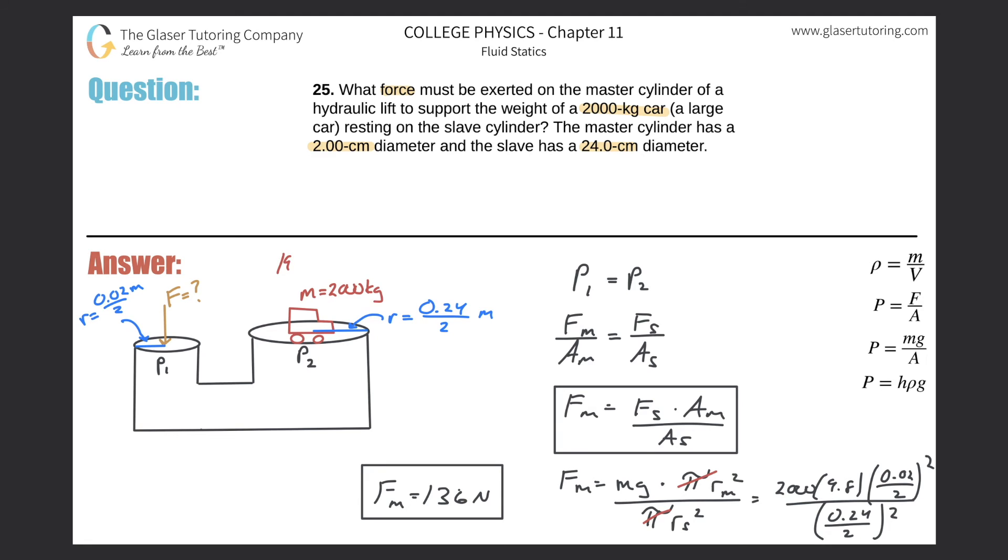This is basically like mechanical advantage. Here's the force that we put in, here's the force that gets outputted. The distance will be different over which the car travels and the master cylinder travels, but if we took the ratio between these two we could find the mechanical advantage.